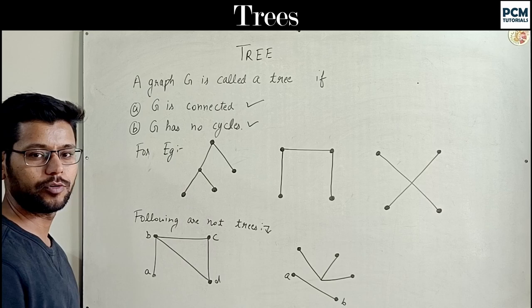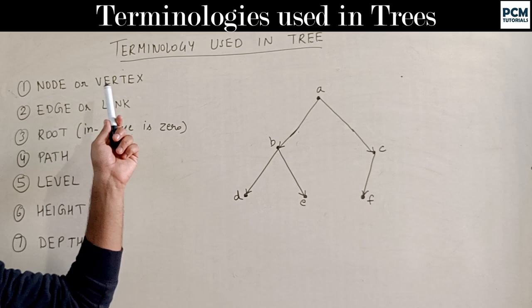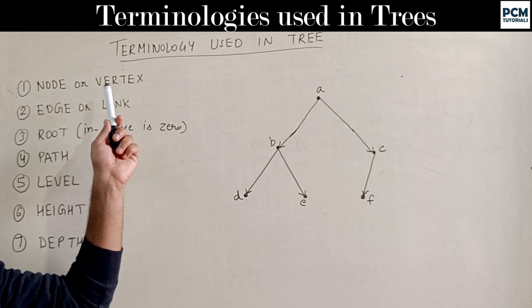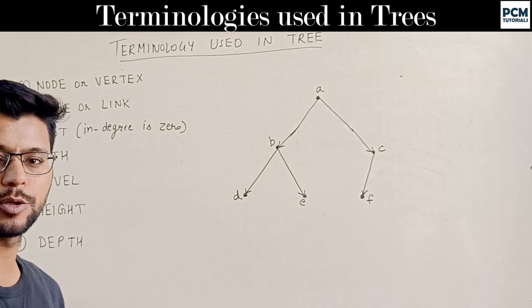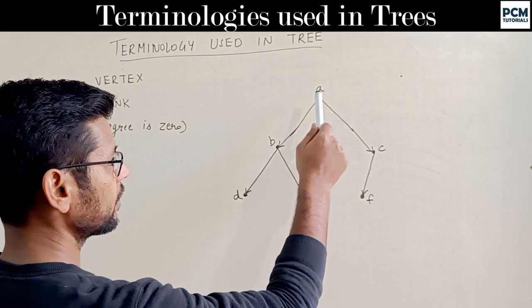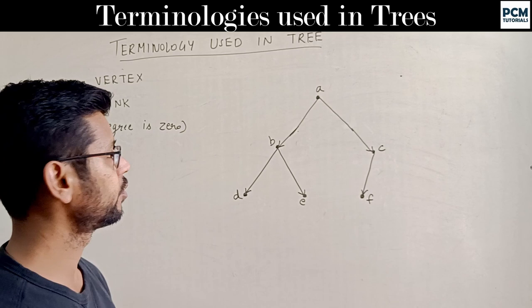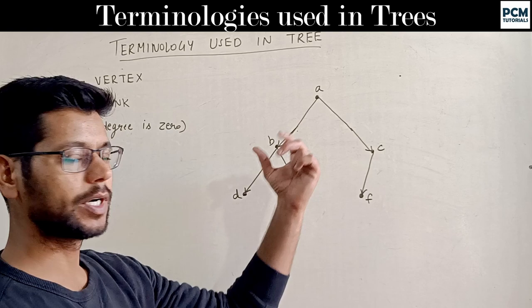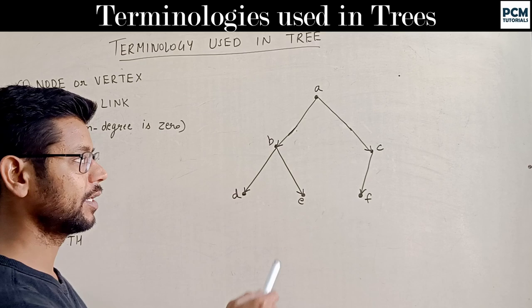When we discuss trees, we will study some terminology. First: node and vertex. The points in a tree are called nodes or vertices. Similarly, edge and link — you have studied the edge. Between two vertices, the line joining them is the edge. Similarly, between two nodes, the line joining them is called an edge or link.